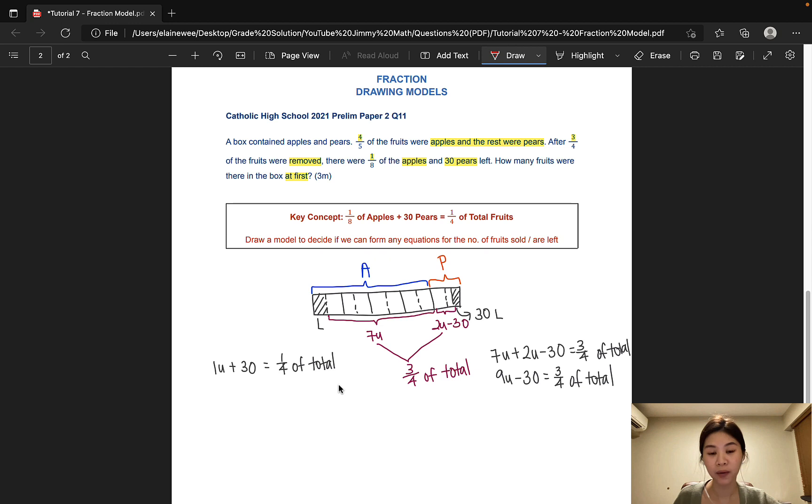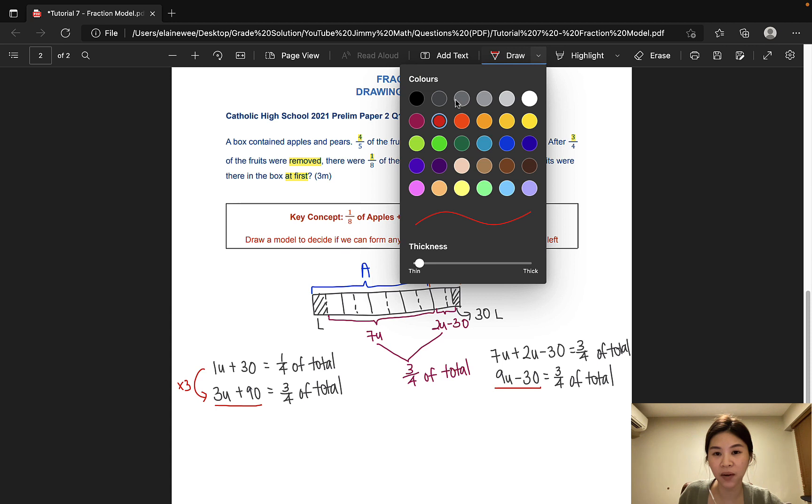In order to make a fair comparison, we have to make sure that the values here and here are the same. So how do we make one-quarter into three-quarters of total? We just multiply the entire equation by three. That would give us three units plus 90 equals to three-quarters of the total. So what that effectively means is that nine units minus 30 is actually the same as three units plus 90. So let's write that down in another equation.